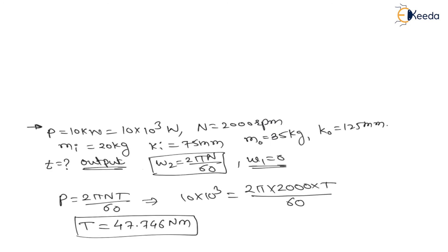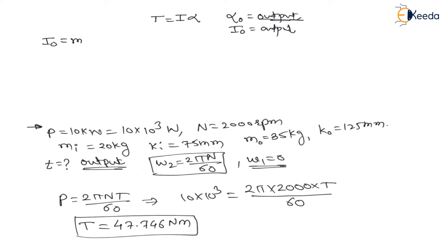Now we need to find the time to bring the output shaft to rated speed from rest. This torque can be written as T = Iα, where I is the mass moment of inertia and α is angular acceleration. We need this for the output shaft, so I must be for the output shaft: I = mk², i.e. I₀ = M₀ × K₀².